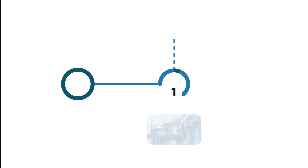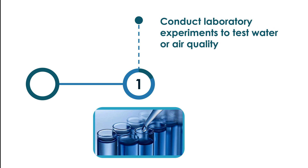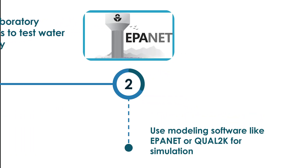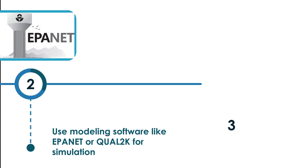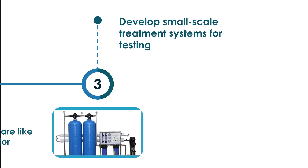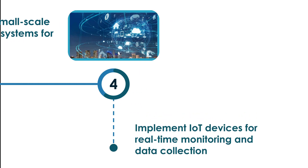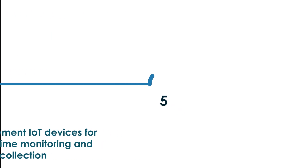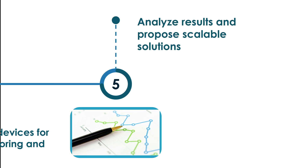For prototype development, conduct laboratory experiments to test water or air quality. Use modeling software like EPANET or QUAL2K for simulation. Develop small-scale treatment systems for testing, implement IoT devices for real-time monitoring and data collection, analyze results, and propose scalable solutions.